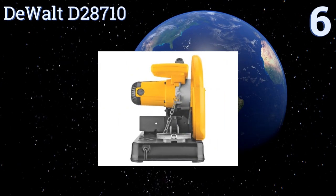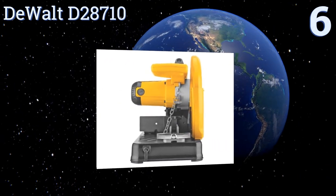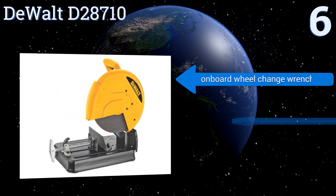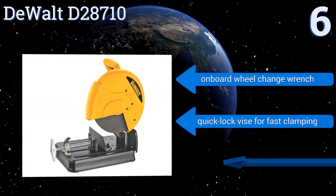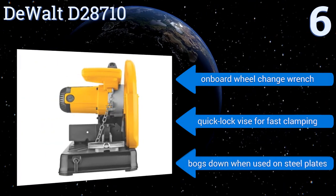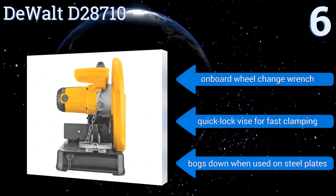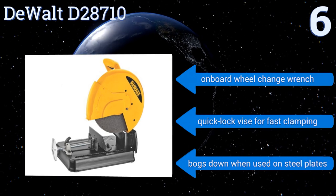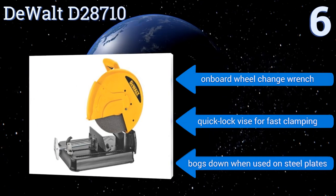At number six, the DeWalt D28710 has a large 14-inch blade that makes short work of almost any material from hardwood to metal piping. It uses aluminum oxide grain wheels that are extremely long-lasting as well. It can trip your breakers if you're doing heavy cutting though.